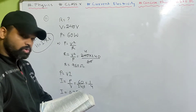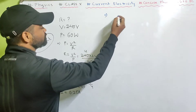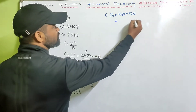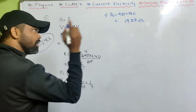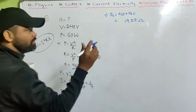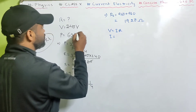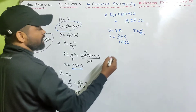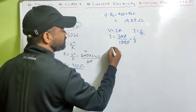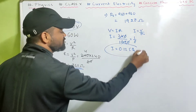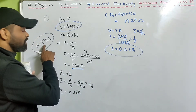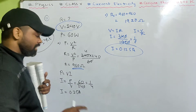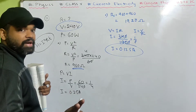When two lamps are connected in series, the equivalent resistance is 960 plus 960 equals 1920 ohm. The current is V by R — 240 by 1920 equals 0.125 ampere. Since the current is less, and heat depends on I squared, each bulb will be less bright compared to when one bulb is used.